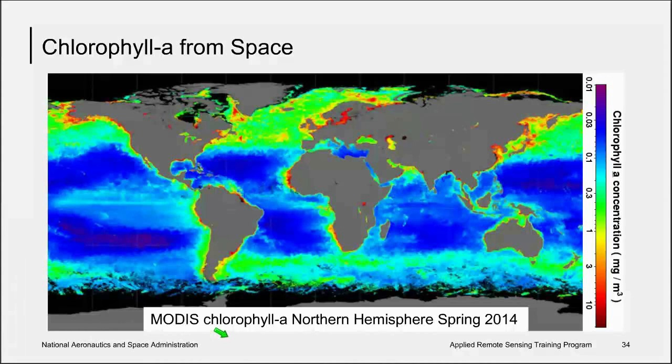During spring, phytoplankton respond to increasing light, warmer temperatures, an increased mixed layer depth, and the abundance of nutrients available to them. As a result, they proliferate and grow. The North Atlantic noticeably greens up during this period.